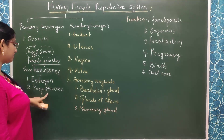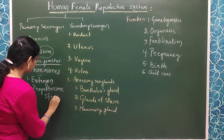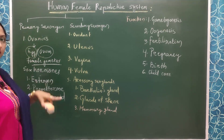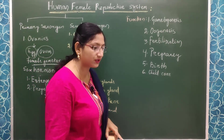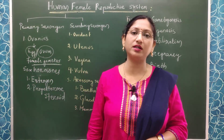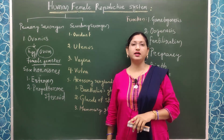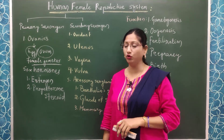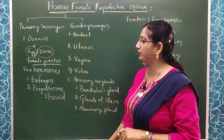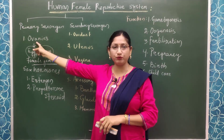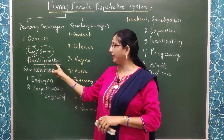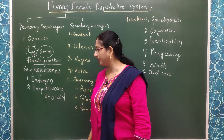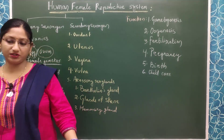Estrogen and progesterone are steroid hormones. Similarly to how the testes produce the male sex hormone androgen — that is testosterone — the pair of ovaries in the female reproductive system produce the female gamete, the egg or ovum, and the sex hormones estrogen and progesterone.